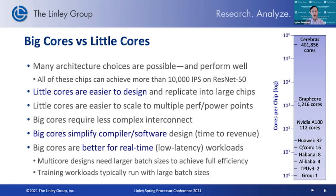There's also a spectrum of options from big cores to little cores, and we've seen many vendors choose places along this spectrum. At one extreme are very small cores — simple to design, you just replicate many of them to form a large chip. It's a very scalable approach. Some architectures use thousands of these cores to create very large chips.